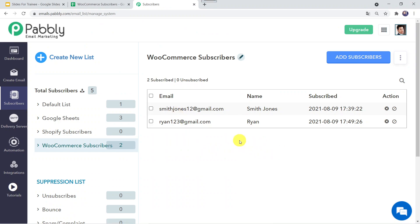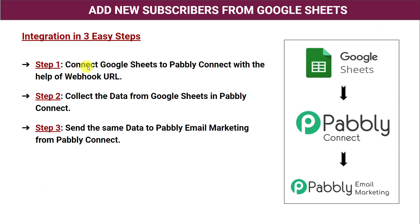You might be wondering how I managed to add subscribers from Google Sheet to my Pably Email Marketing account. I have done this in just three simple steps. At step one, connect Google Sheets to Pably Connect with the help of a webhook URL — we have to go to Pably Connect, get a webhook URL, and paste it into Google Sheets to create the integration. At step two, collect the data from Google Sheets in Pably Connect. At step three, send the same data to Pably Email Marketing from Pably Connect.